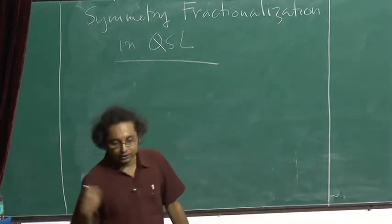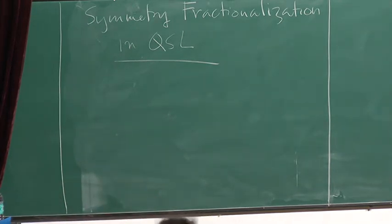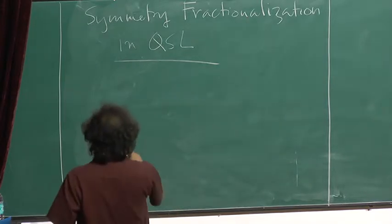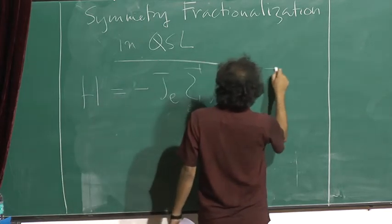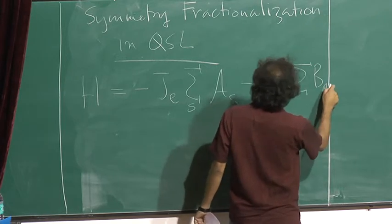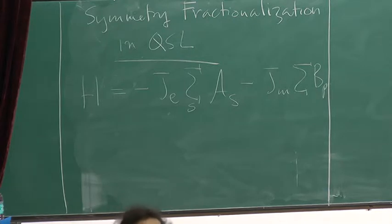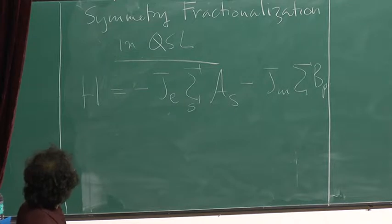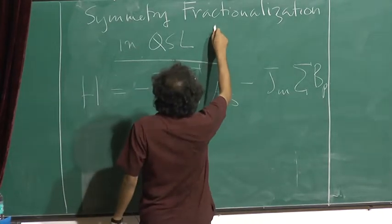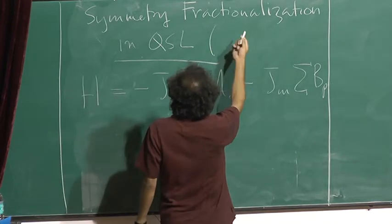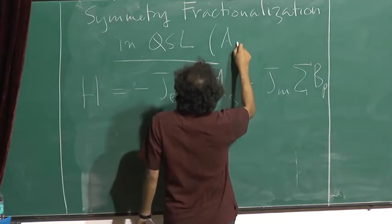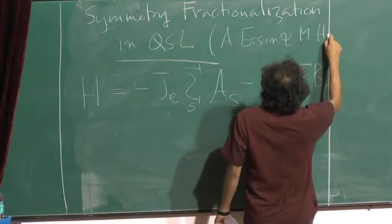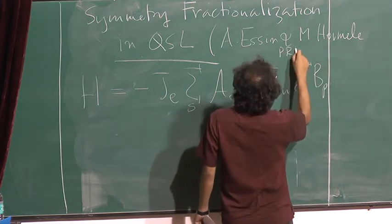I will use the Toric code model as a prototype and discuss some things, and how they generalize. I will start, as last time, writing down this Hamiltonian which you are now very familiar with. Before I start, let me give you a reference, because this is more recent: the paper by Andrew Essin and Mike Hermele, PRB 2014, which covers almost all the things I will be talking about regarding symmetric fractionalization.